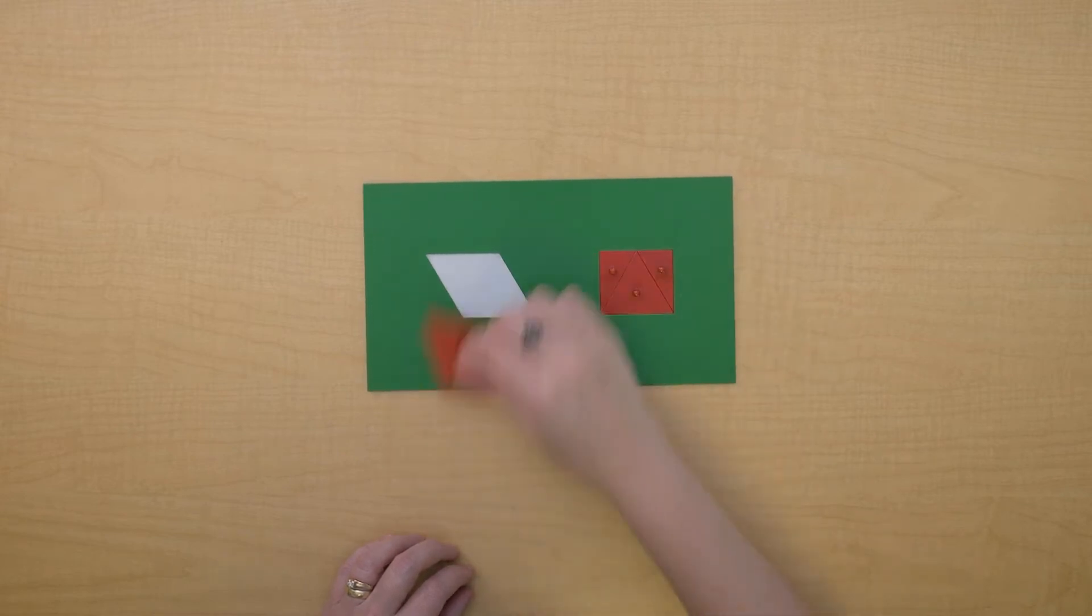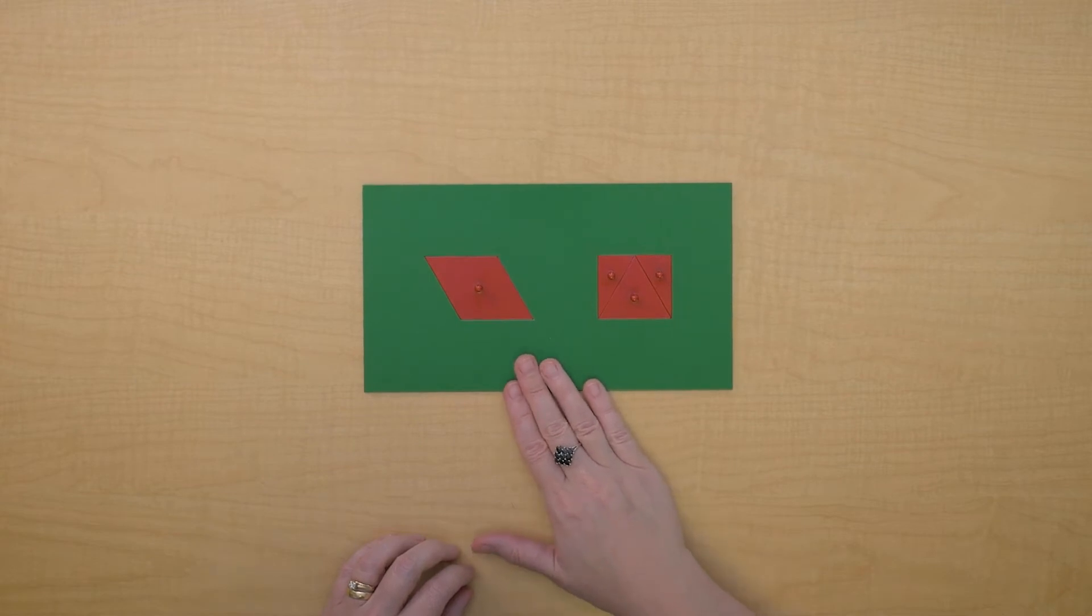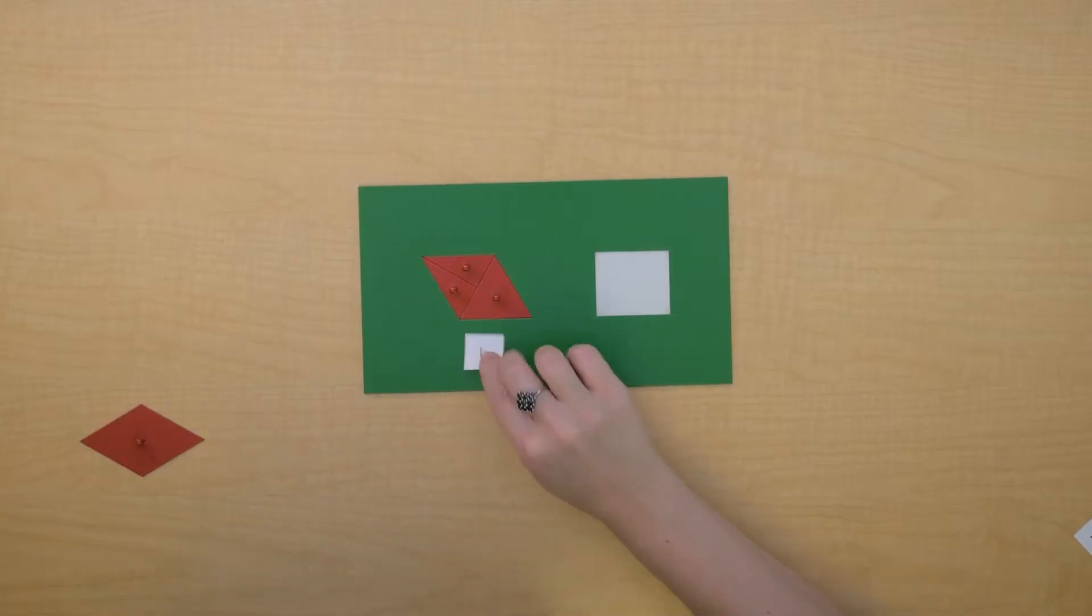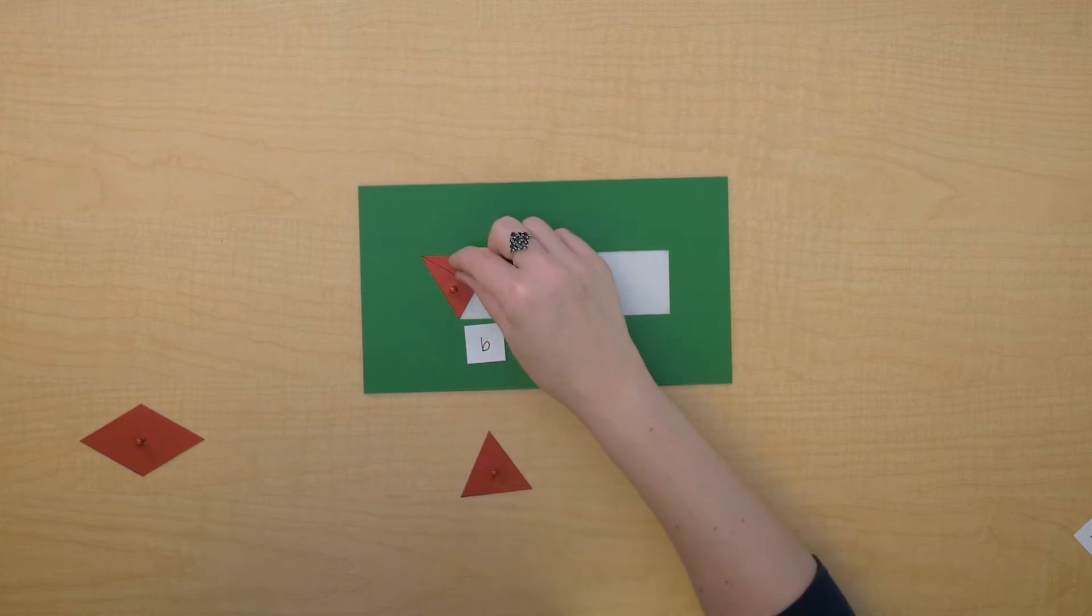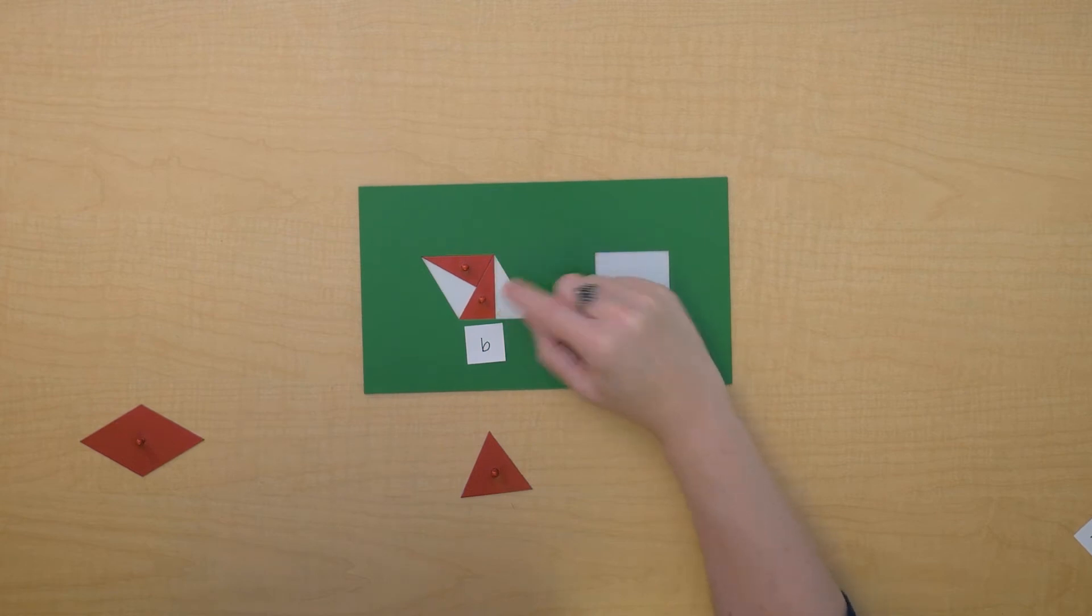So today we're going to use this plate to help us find the formula for area of a rhombus. The first thing we need to do is identify the parts of the rhombus. We have a base right here. Our height's a little harder to see, but we can put it here. We can see here's our height.